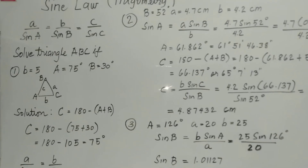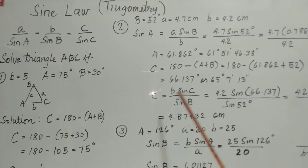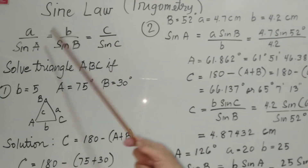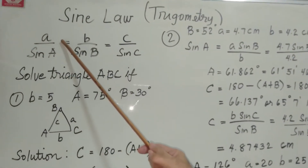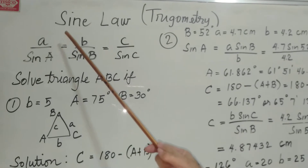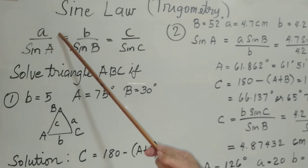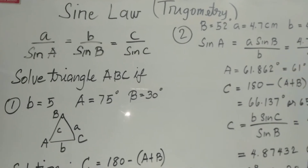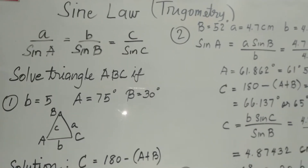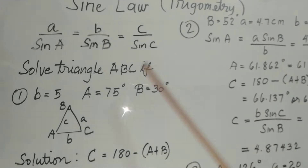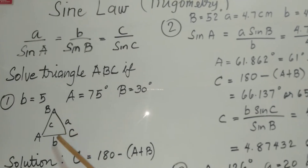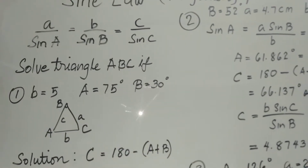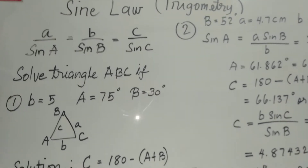Today we're going to talk about the Sine Law. It states that the sides are proportional to the opposite angles of any oblique triangle. When we say oblique triangles, we're talking about triangles which are not right triangles.